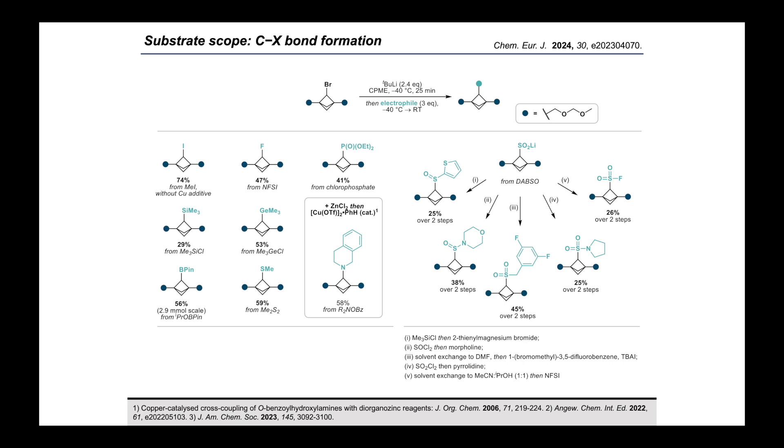So you can see that our chemistry now allows introduction of sulfur(II), sulfur(IV), and sulfur(VI) functionality at the bridge position of BCPs, all through the same general method, starting from the same bromide starting material.